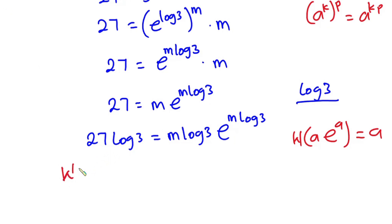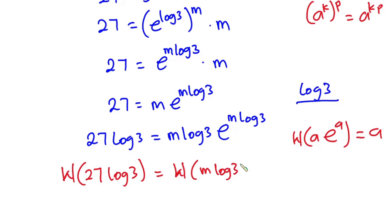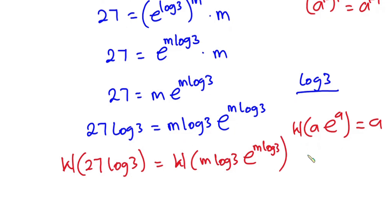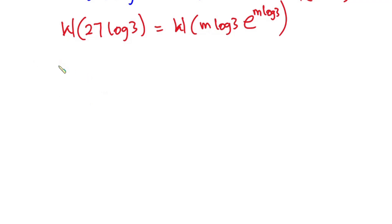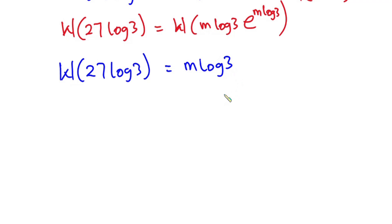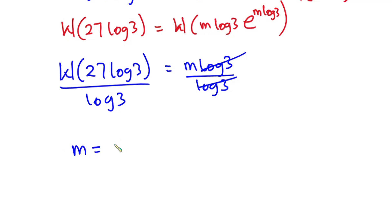Introducing the Lambert W function on both sides of the equation, we have W of (27 log 3) equals m log 3 times e to the power (m log 3). Applying the W function, we get W of (27 log 3) equals m log 3. Now dividing each side by log 3, this cancels, and we have m equals W of (27 log 3) divided by log 3.